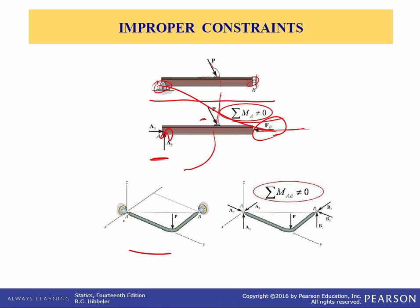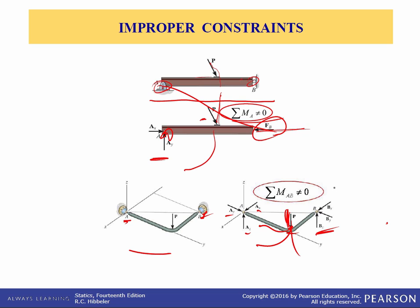If you sum moments about point A, the vertical component of point P causes a moment about A but there's nothing to stop it — no moment due to the roller force — so the beam is going to rotate. Another example: a ball and socket joint at A that can support three reactive forces but no moments, an applied load at P, and another ball and socket also with only three reactive forces. Pushing down on this pipe assembly at B will cause it to swing down. Summing moments about the line between A and B gives a nonzero result, so it is improperly constrained.